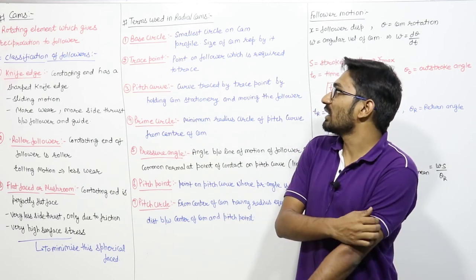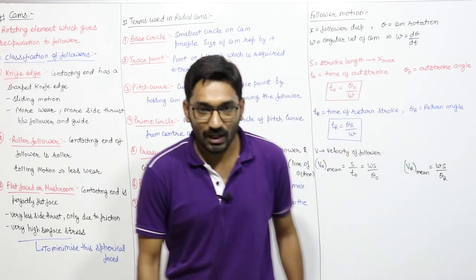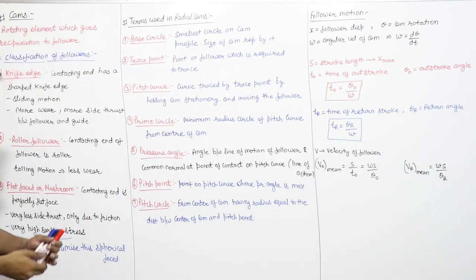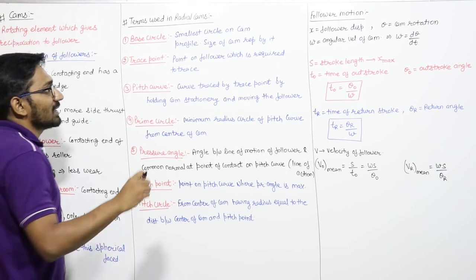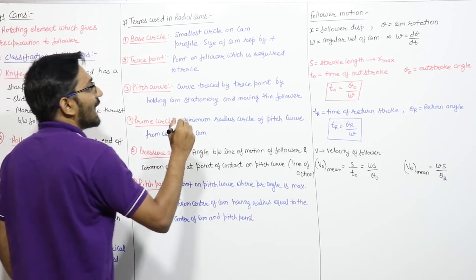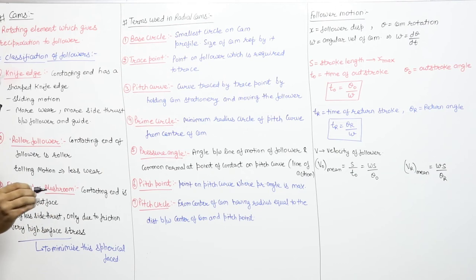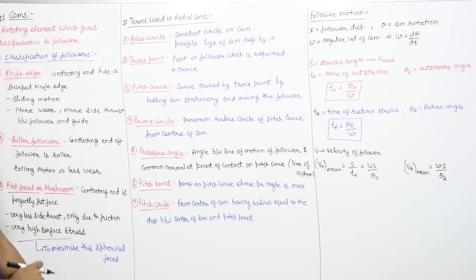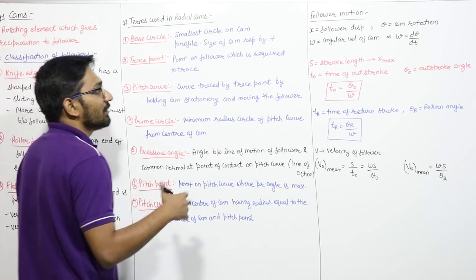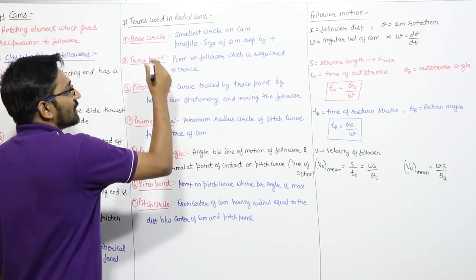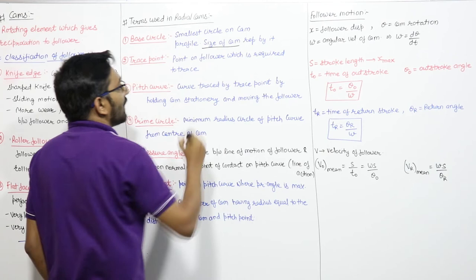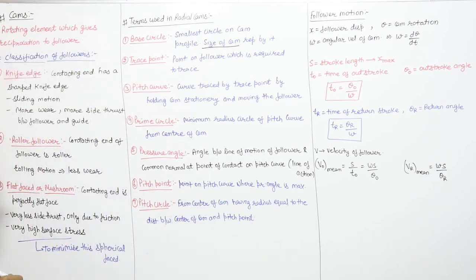Now let us discuss the terms used in radial cams. First is the base circle — the smallest circle that can be drawn on the cam profile from the center of the cam. The size of the cam is defined by the base circle. Next is the trace point — the point on the follower required to trace the cam profile. For a knife edge follower, the edge is the trace point; for a roller follower, the center of the roller is the trace point.